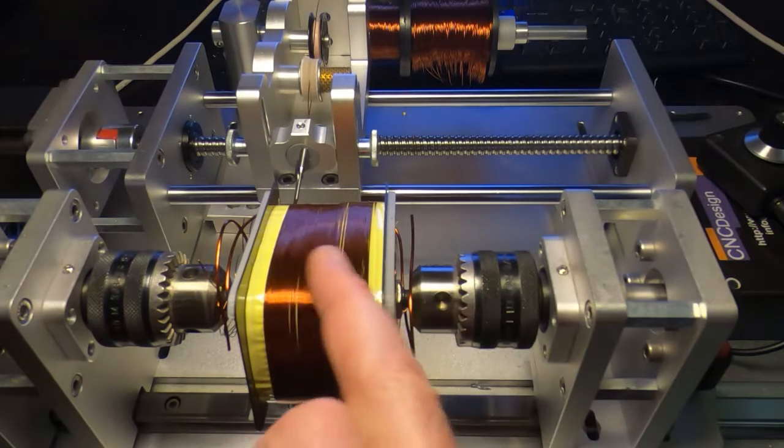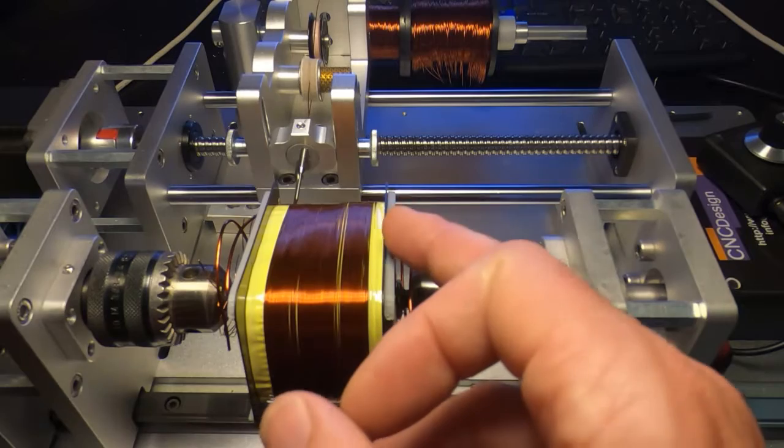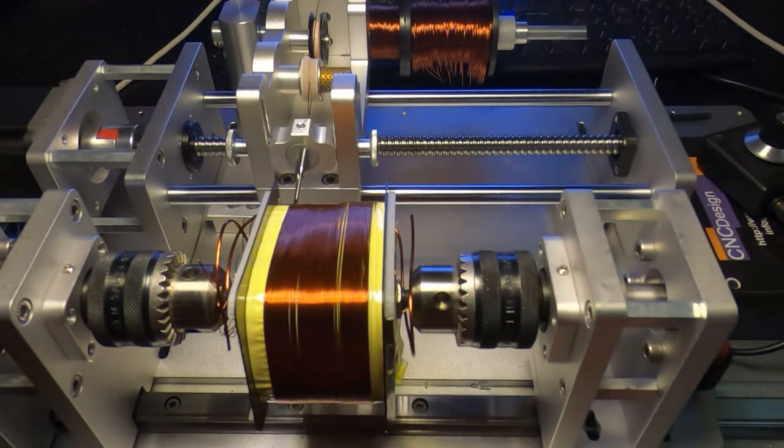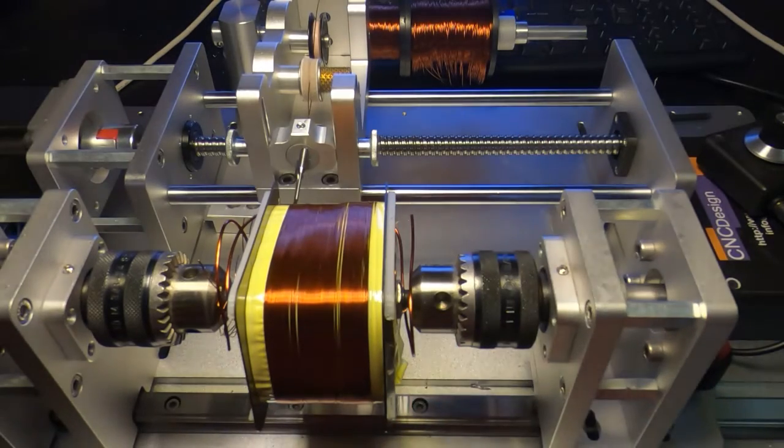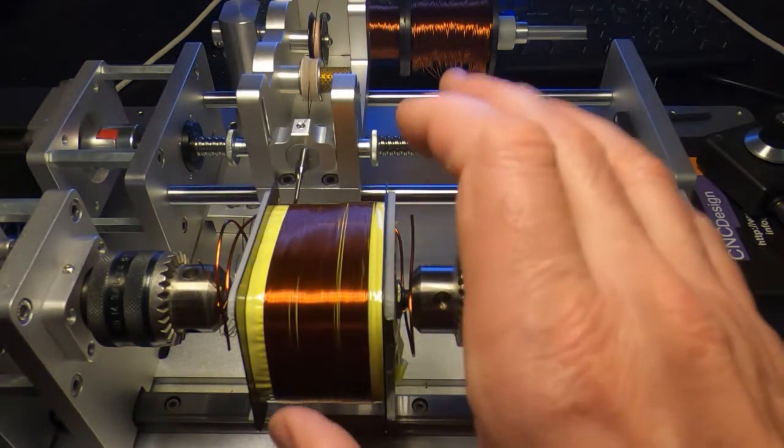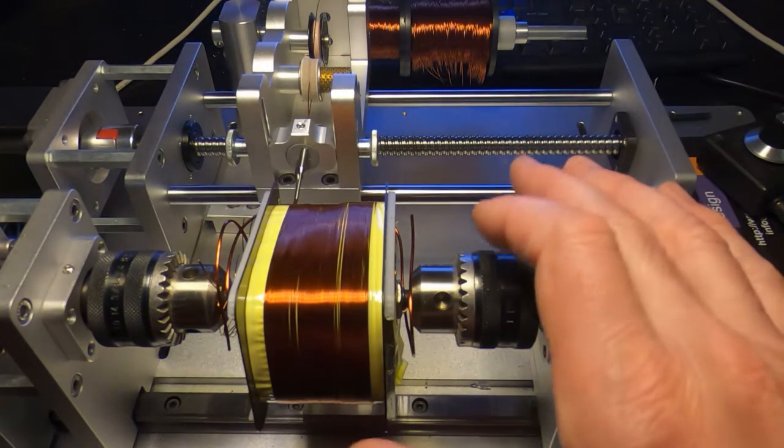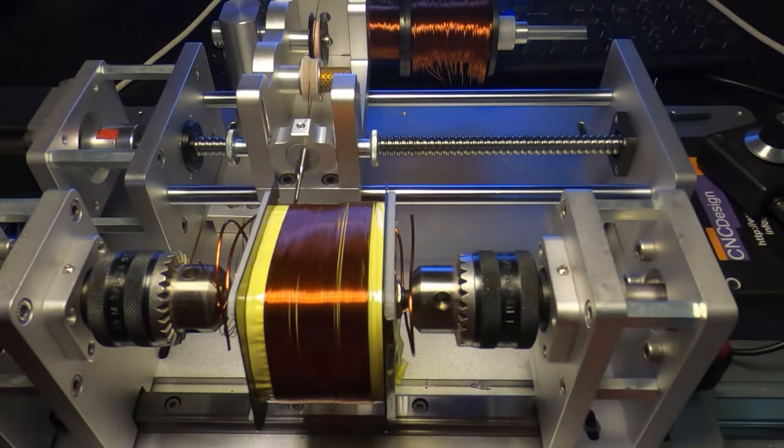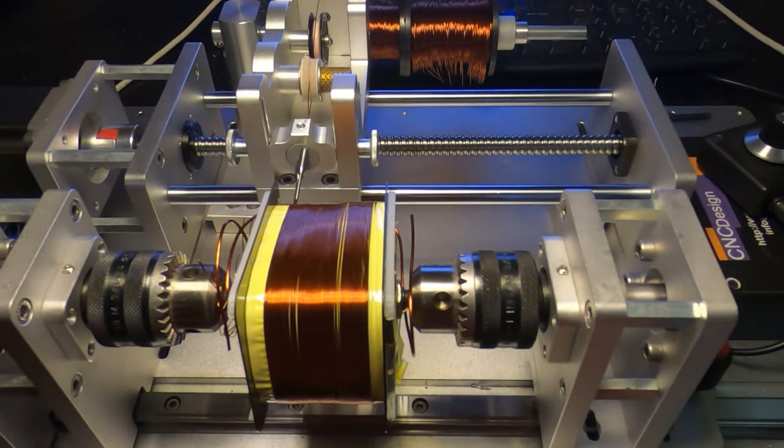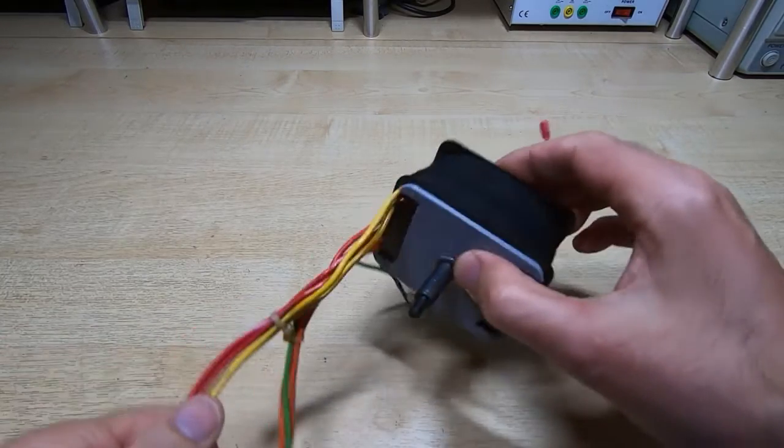All that's left to do now is to get the final layers of insulation put on and then make the terminations to the flying leads. I can then start to reassemble the stack and that will be the transformer complete. In this video we'll get this finished off, get it tested, and then it will be ready to refit to the instrument.